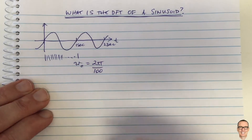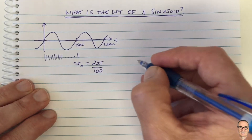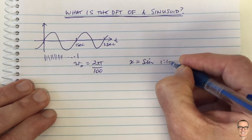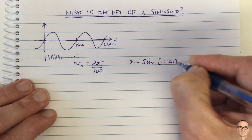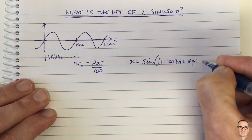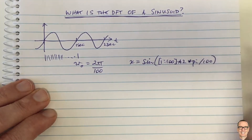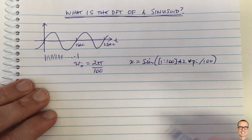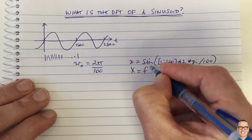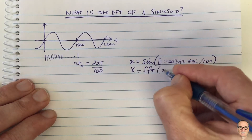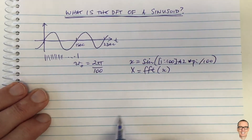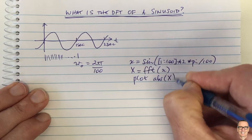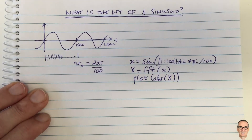In MATLAB, we could write this as x = sin([1:100] * 2 * pi / 100). We can then compute the FFT — the fast way of calculating the discrete Fourier transform — and plot the absolute value of the result.